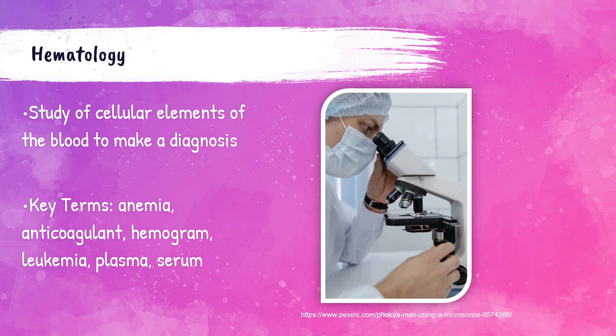The hematology department uses whole blood specimens to help diagnose anemias, leukemias, and other blood cell anomalies. Key terms for this section include: anemia, anticoagulant, hemogram, leukemia, plasma, and serum. Anemia is a condition resulting from a lack of red blood cells or when the red blood cells are dysfunctional and don't work properly.